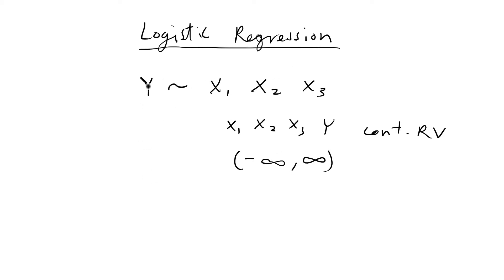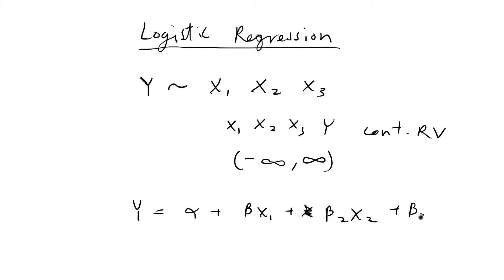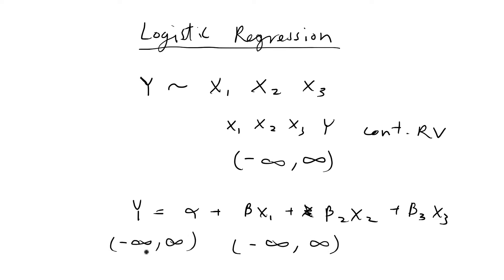When you have a linear model where your outcome variable y is continuous and your predictor variables are continuous, the linear regression model is basically that y is equal to a linear combination of the predictor variables. Because the x's are continuous, this can exist anywhere from negative infinity to infinity on the right-hand side, and on the left-hand side a linear combination of terms also has the same domain — negative infinity to infinity.